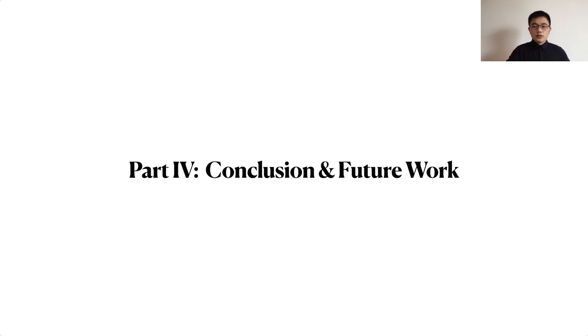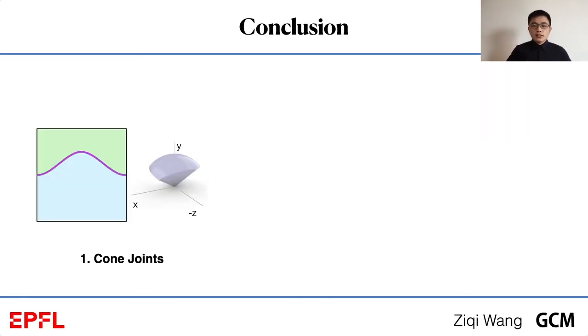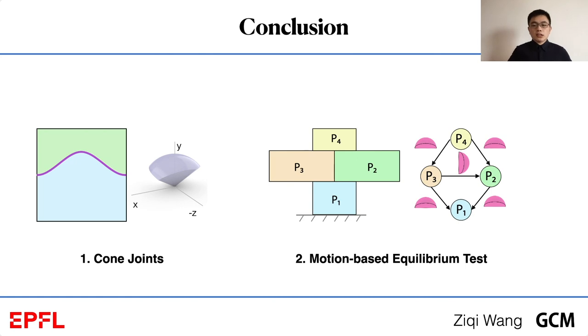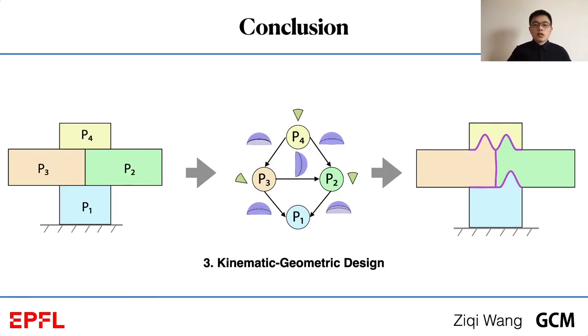Conclusion and future work. In this project, first, we propose cone joints, which enable a good balance between stability and assemblability. Second, we establish a connection between the geometry of a joint and its motion space, and we present a motion-based method for static analysis of assemblies with cone joints. Third, we separate our design pipeline into kinematic and geometric design stages, which makes the optimization computationally tractable.